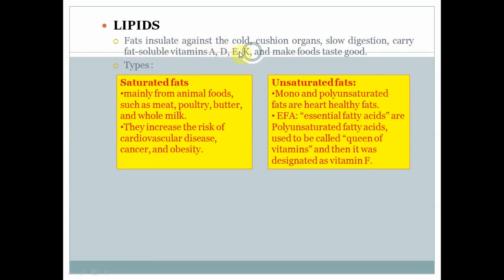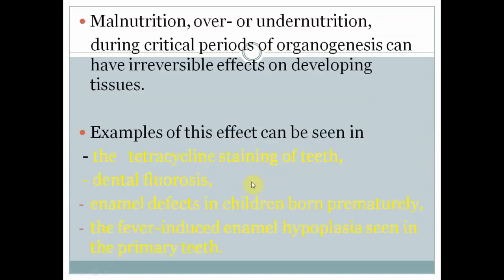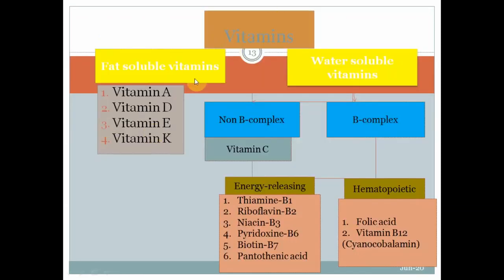Lipids are basically fats — saturated and unsaturated — and they carry fat-soluble vitamins A, D, E and K. Nutritional factors affecting the oral cavity require optimal nutrition for hard and soft tissue development. Malnutrition can cause tetracycline staining of teeth, dental fluorosis, enamel defects in premature-born children and fever-induced enamel hypoplasia. Nutrient deficiencies or excesses are directly associated with protein, calcium, phosphorus, vitamin C, vitamin A and D, iodine and fluorine.